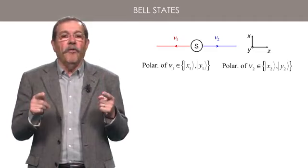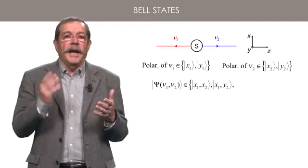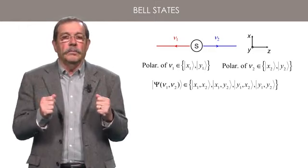Any quantum state of these two photons belongs to a four-dimensional space of which obvious basis vectors are x1, x2, x1, y2, y1, x2, and y1, y2.